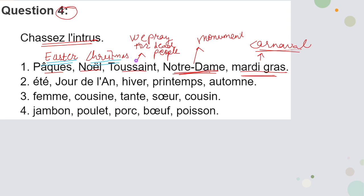Moving to the second set: été, Jour de l'an, hiver, printemps, automne. Été is summer, hiver is winter, printemps is spring, and automne is autumn. Jour de l'an is New Year. So the clear difference is that New Year is the odd one out — the correct answer for the second one is Jour de l'an.